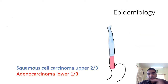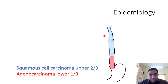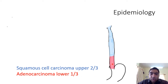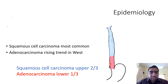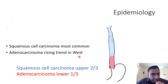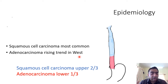Coming to the epidemiology of esophageal cancer, we can see that squamous cell carcinoma is more common in the upper two-thirds of the esophagus, and adenocarcinoma is more common in the lower one-third of the esophagus. Squamous cell carcinoma is the most common worldwide.